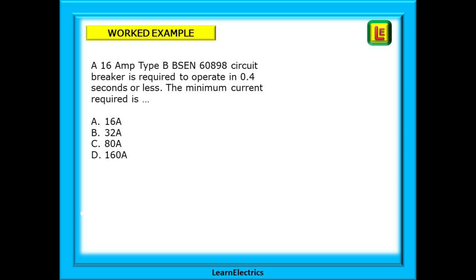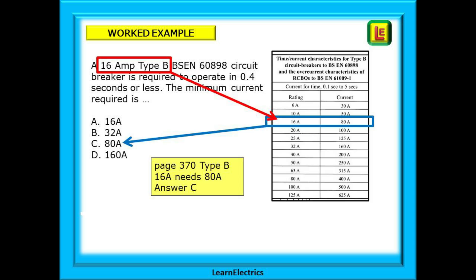Let's do a worked example of a typical exam question on this. The question asks: a 16 amp type B BS EN 60898 circuit breaker is required to operate in 0.4 seconds or less. The minimum current required is, and there are four possible answers shown. Only one is correct.